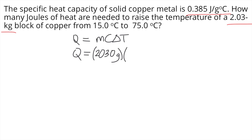C stands for the specific heat capacity, which is already given in the problem — that's 0.385 joules per gram degree Celsius.